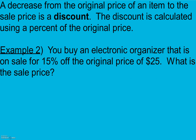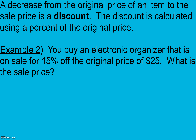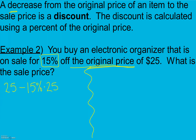In example two, you buy an electronic organizer that is on sale for 15% off the original price of $25. What is the sale price? This one is a little bit different — we have a sale, so we're not adding on more. When we find a discount it's less, so we subtract. Starting with $25, instead of adding a markup, we subtract a 15% discount of the original price. Moving the decimal two places and multiplying gives $3.75. Taking the whole amount minus the discount gives $21.25.